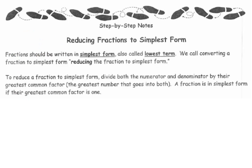You can reduce fractions to simplest form. Sometimes we say simplest form or lowest term. We call converting to simplest form reducing. What you want to look for is to find your greatest common factor and use that to divide both the numerator and the denominator.